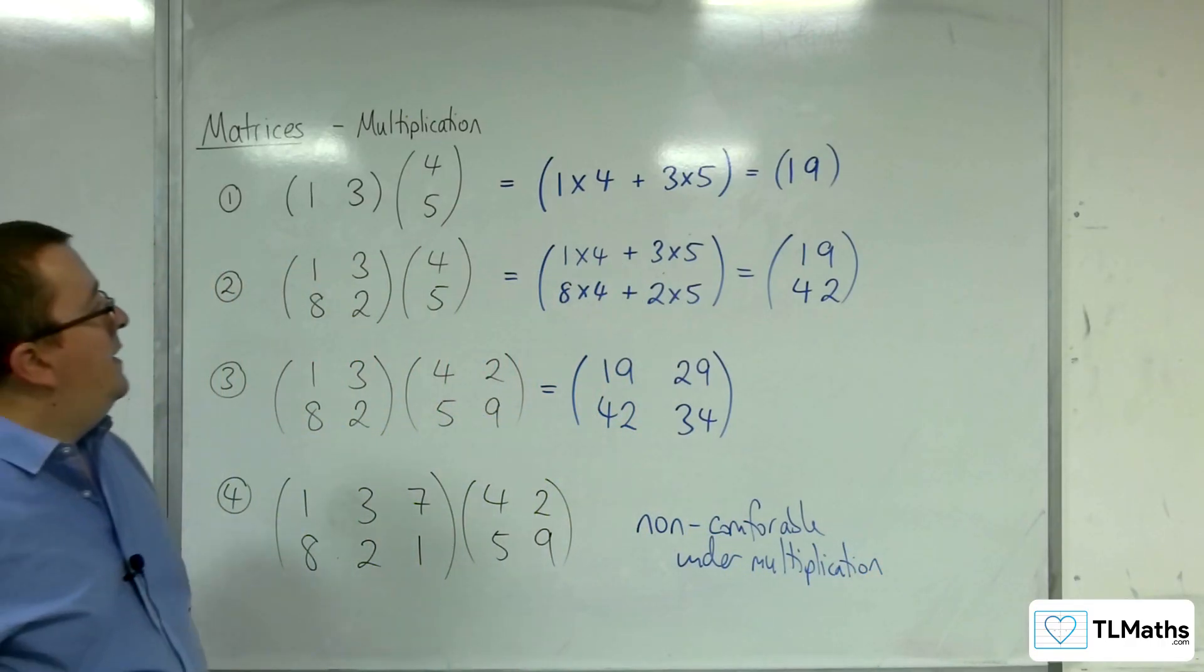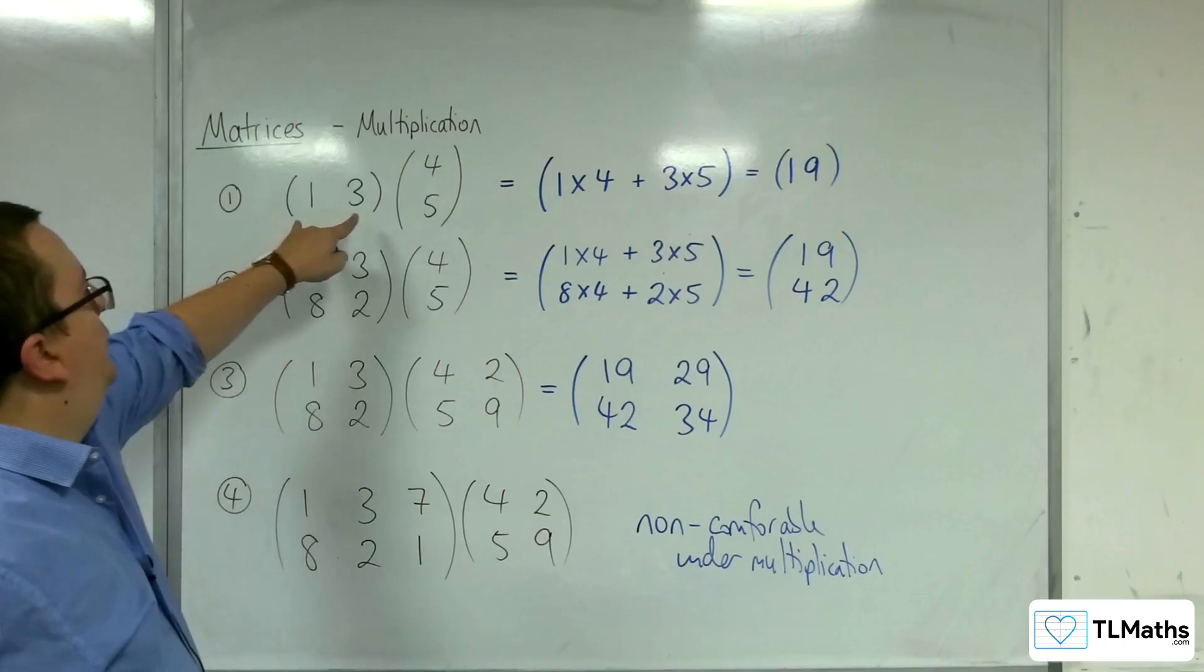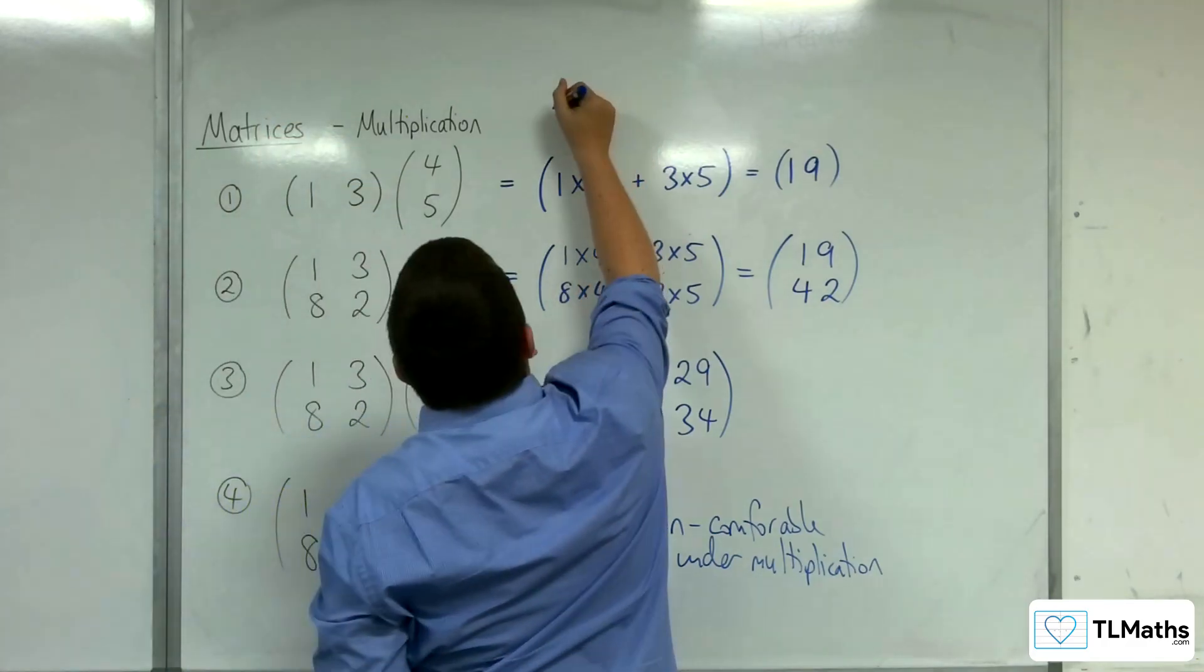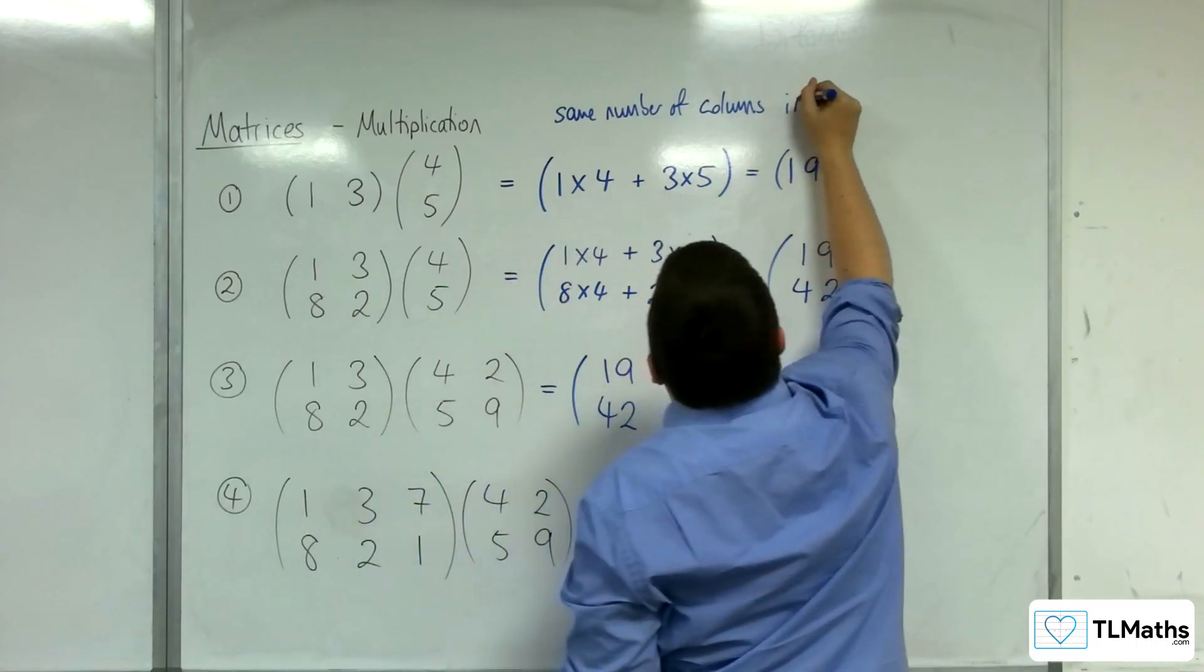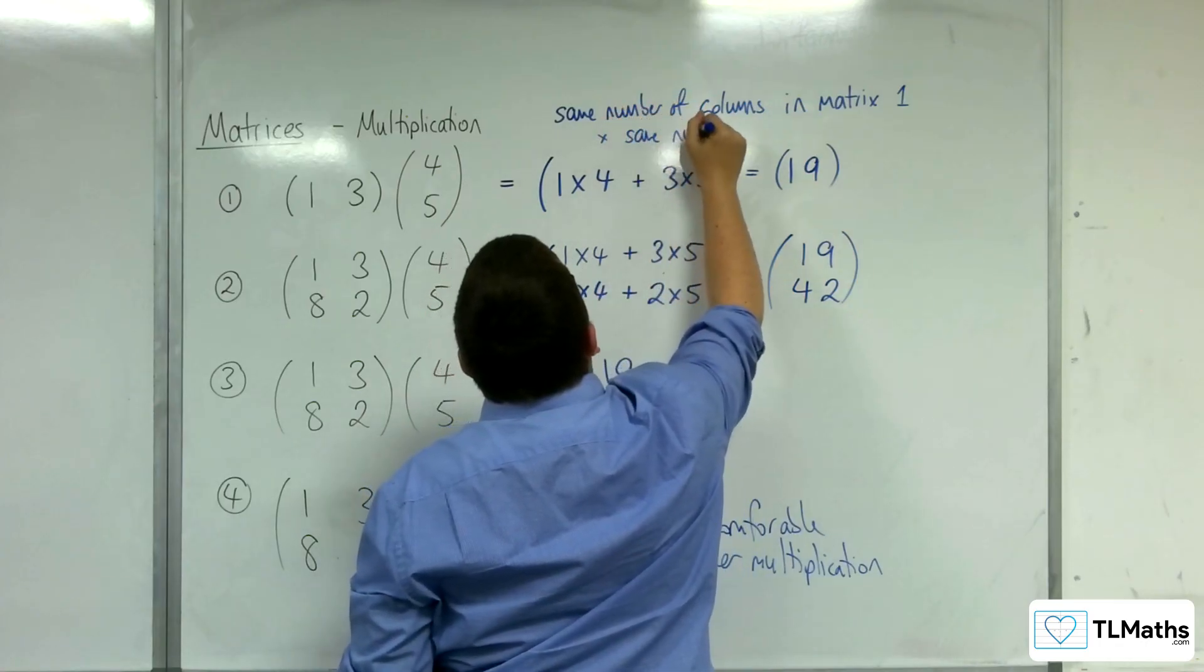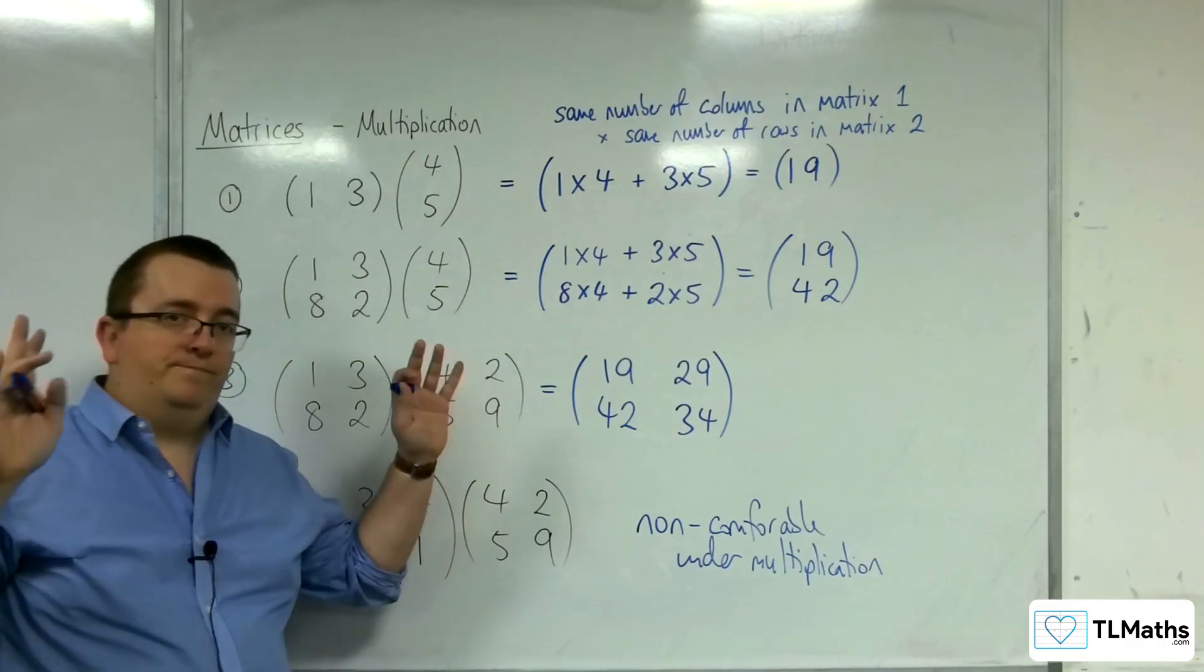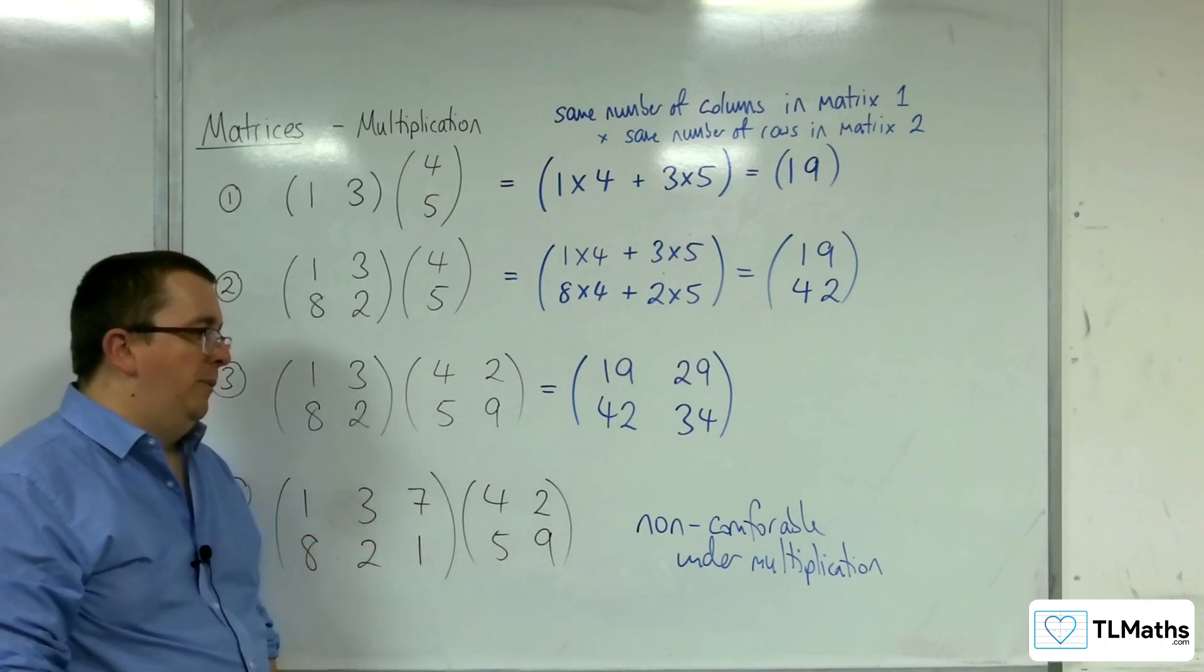So, essentially, what I need in order to be able to multiply two matrices together is to have the same number of columns in the first matrix as I do rows in the second matrix. Same number of columns in matrix 1 times by same number of rows in matrix 2. That's really what I'm saying, just so that you're kind of clear on why that would be the case. And so this is how we can multiply matrices together.